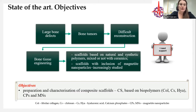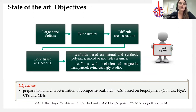Bone tissue engineering is based on scaffolds, cells, and bioactive molecules, with scaffolds being the main component. The scaffolds are mainly based on natural and synthetic polymers mixed or not with ceramics. Magnetite, an iron oxide used mainly for hyperthermia and drug delivery, has gained attention for bone tissue engineering because some studies have shown it can increase the number of osteoblasts. The objectives of the paper were the preparation and characterization of composite scaffolds based on biopolymers, calcium phosphate, and magnetite nanoparticles.